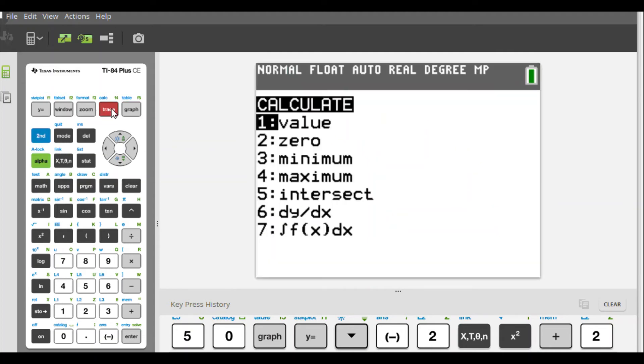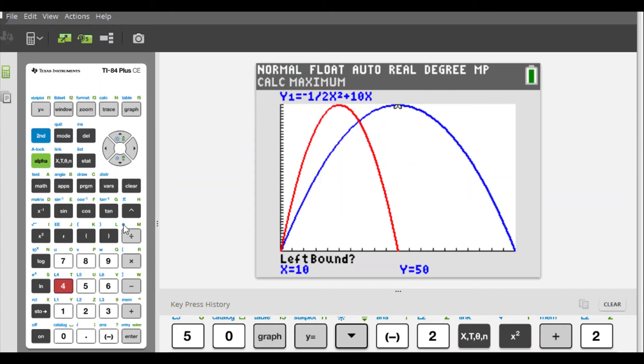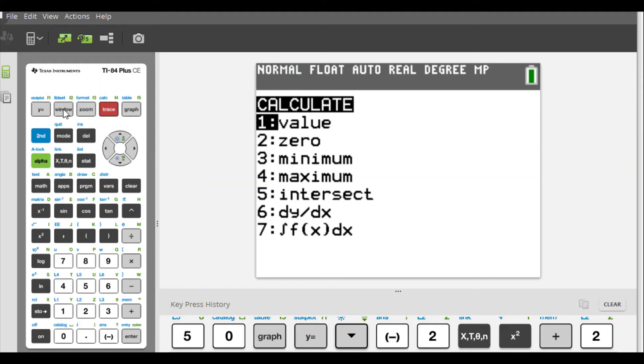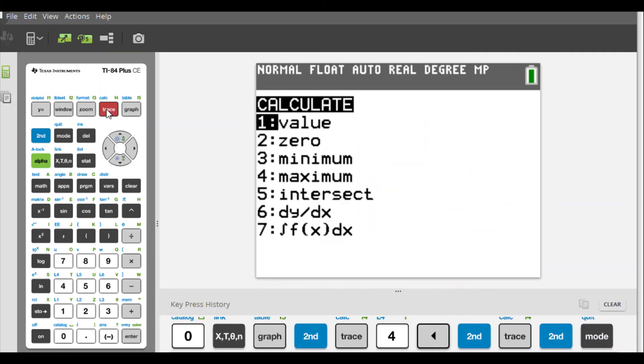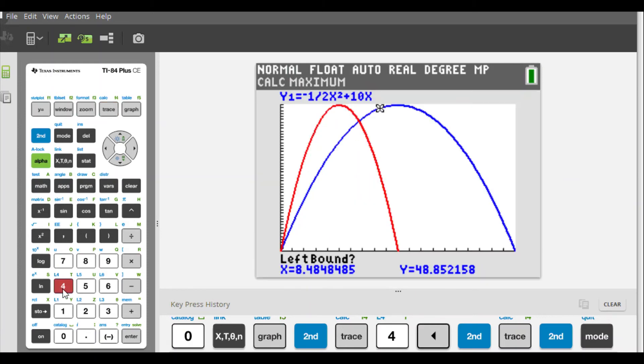We have second calc, which is what allows us to, second trace was calculate, and we have something called the maximum, which we're looking for. Okay? Not for this graph. Oops. Well, I got changed around. Okay. So instead, let's do this here. Let me just do, let me change this here, second calc.